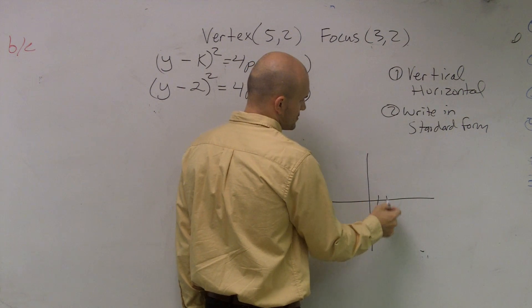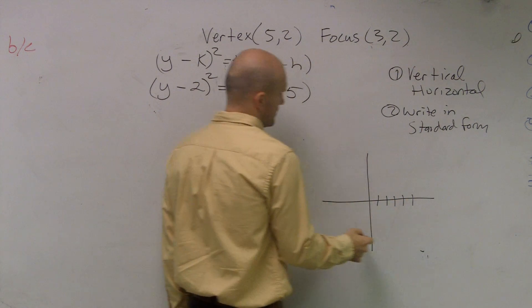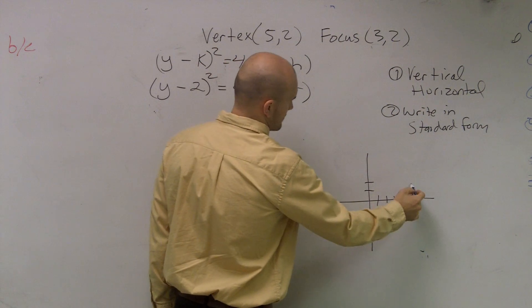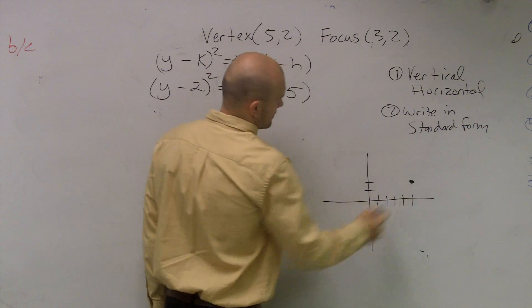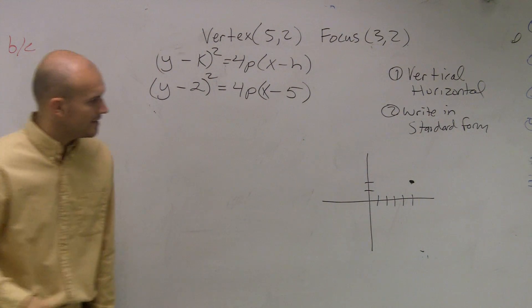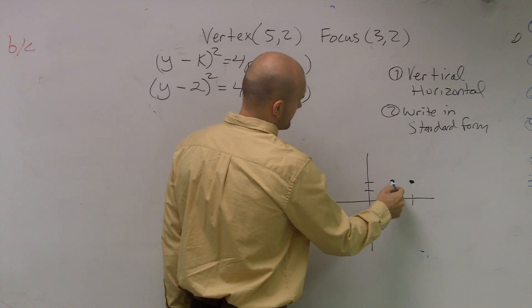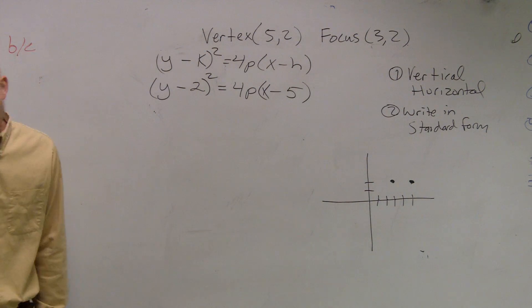So we have one, two, three, four, five, and this is 5 comma 2, right? And then we can also write in that our focus was at 3 comma 2. One, two, three, one, two.